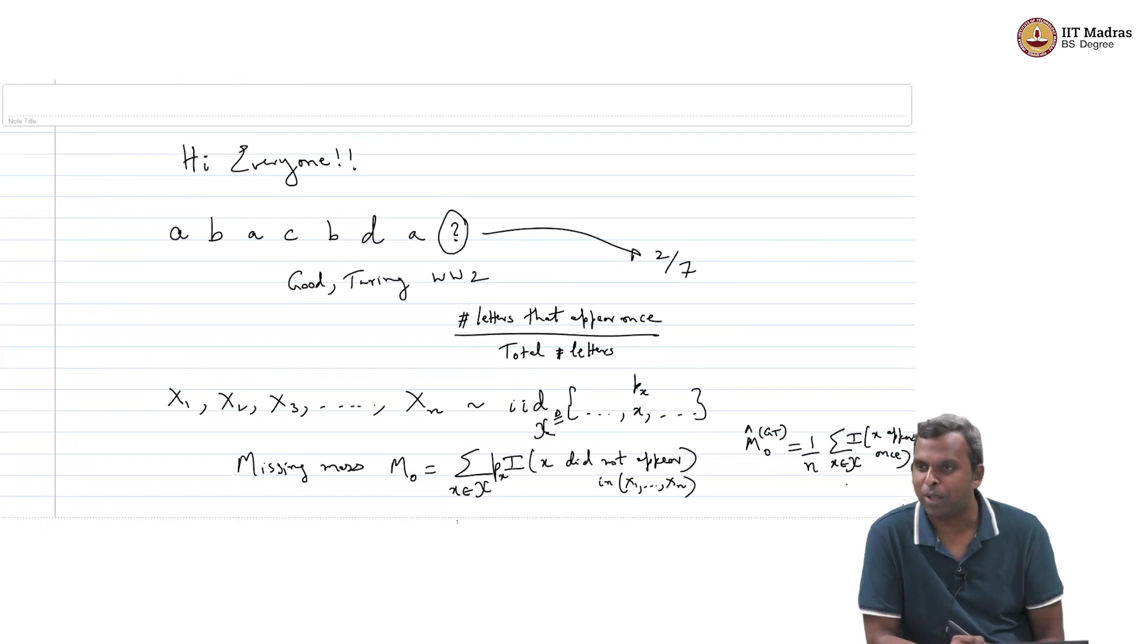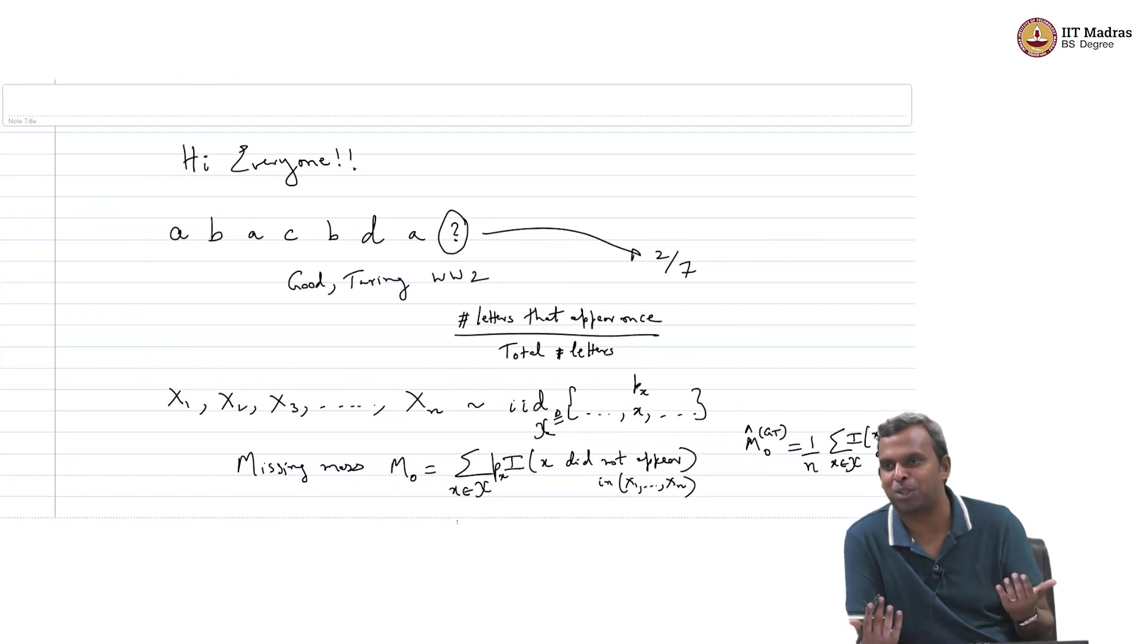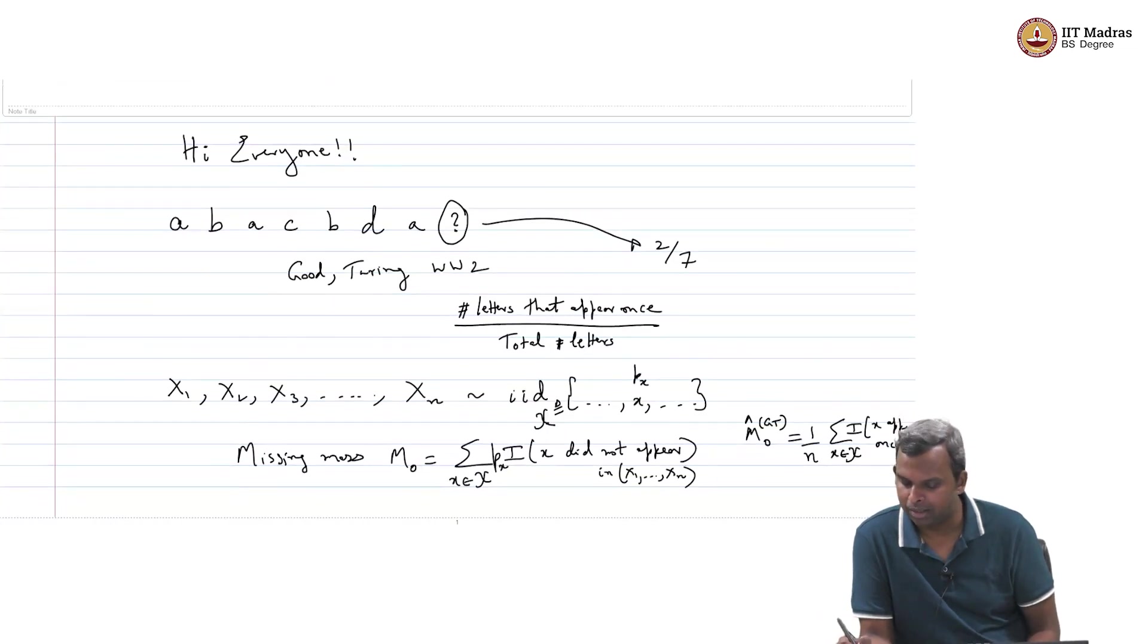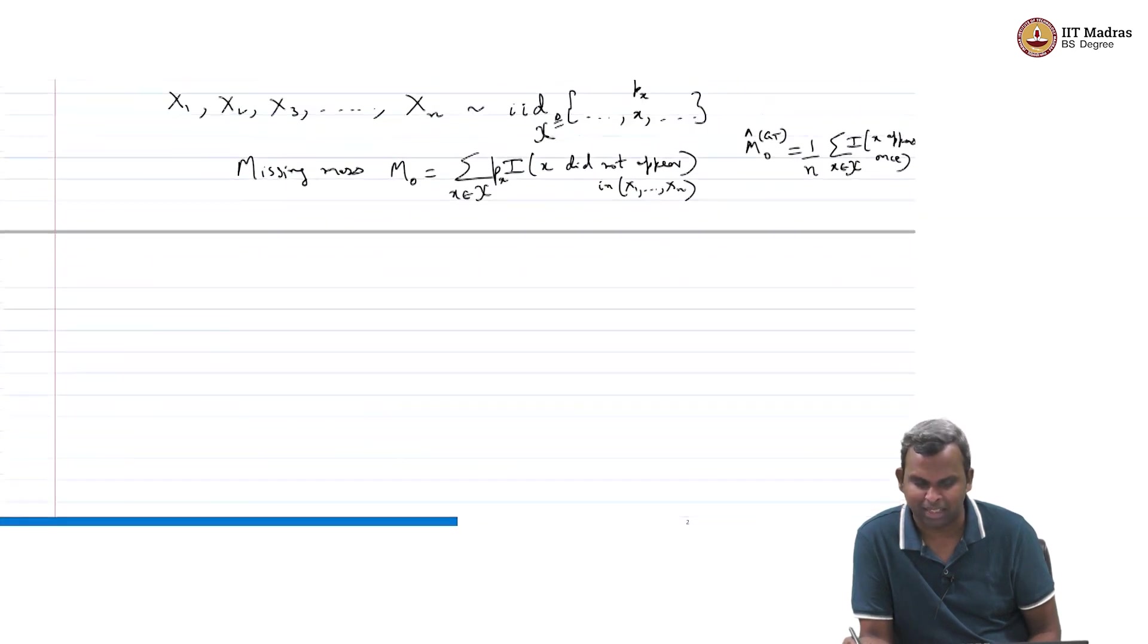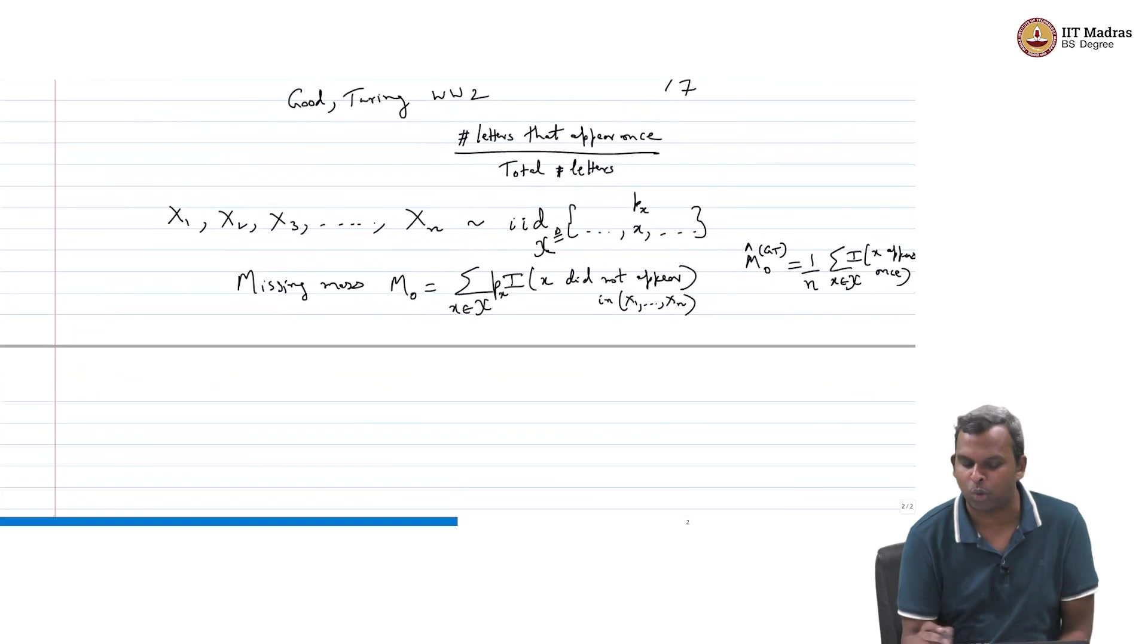M_0 hat, I will call it GT which is after Good-Turing. This is going to go as, this is 1 by N, this is easy, right. N comes in the denominator, total number of letters. How do you write number of letters that appear once. You can write it using this indicator function, no. So you can say summation X and script X indicator that X appears once. Is that okay. Right, so at this point if you stop, you have only written a mathematical description of what was said and then you put out a model there.